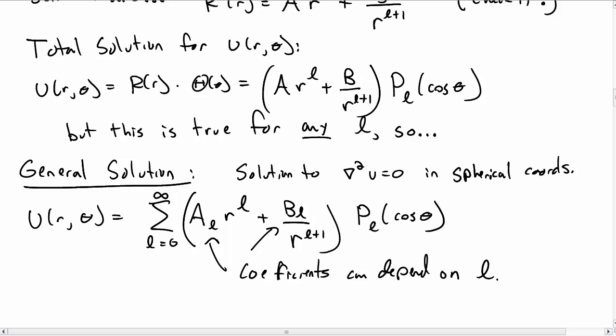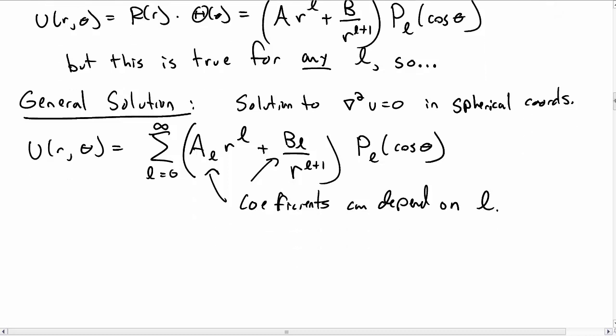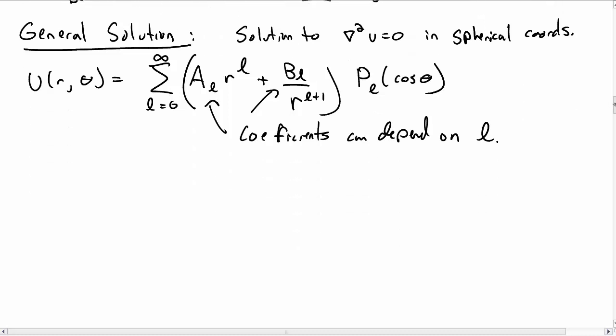In a previous video, we were studying solutions to Laplace's equation in spherical coordinates as a way to study the steady-state temperature of a ball, where the temperature was given on its boundary. We came up with a general solution involving coefficients a_l and b_l for the temperature, and now we need to ask: what are the a_l's and b_l's, and how are we going to find them?